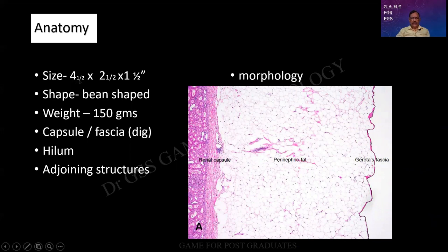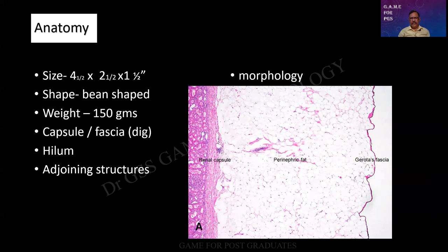Size: four and a half by two and a half by one and a half inches, but if it is going to be in centimeters, kindly measure. Shape is bean-shaped. We should be careful whenever we use the word bean-shaped — kidneys are bean-shaped, lymph nodes are bean-shaped, beans are kidney-shaped. Any structure that has got a hilum will be bean-shaped in outline, for the entry and exit of structures. The weight is about 150 grams.